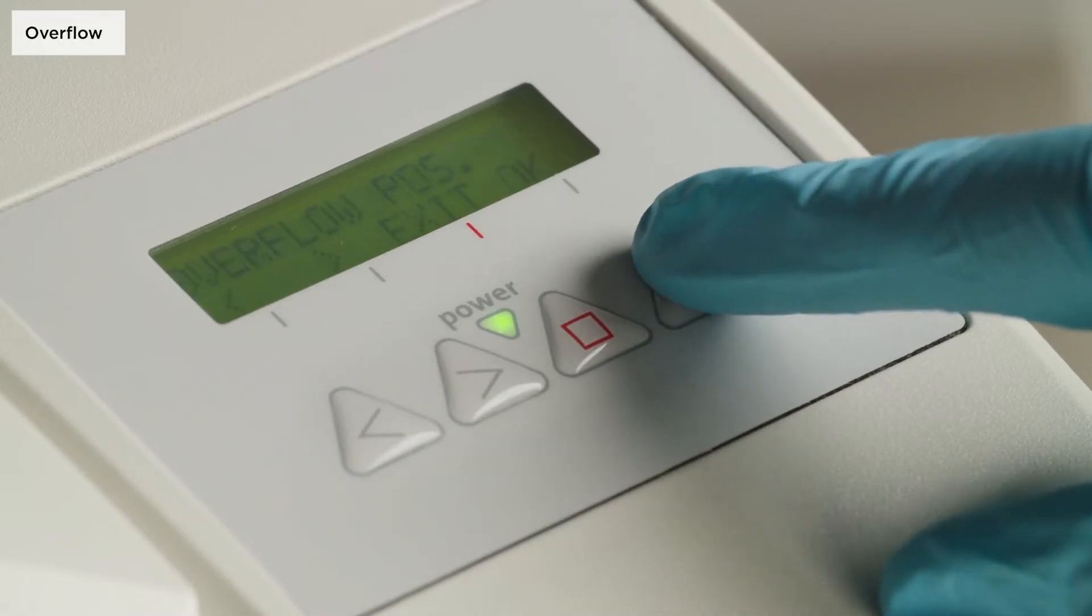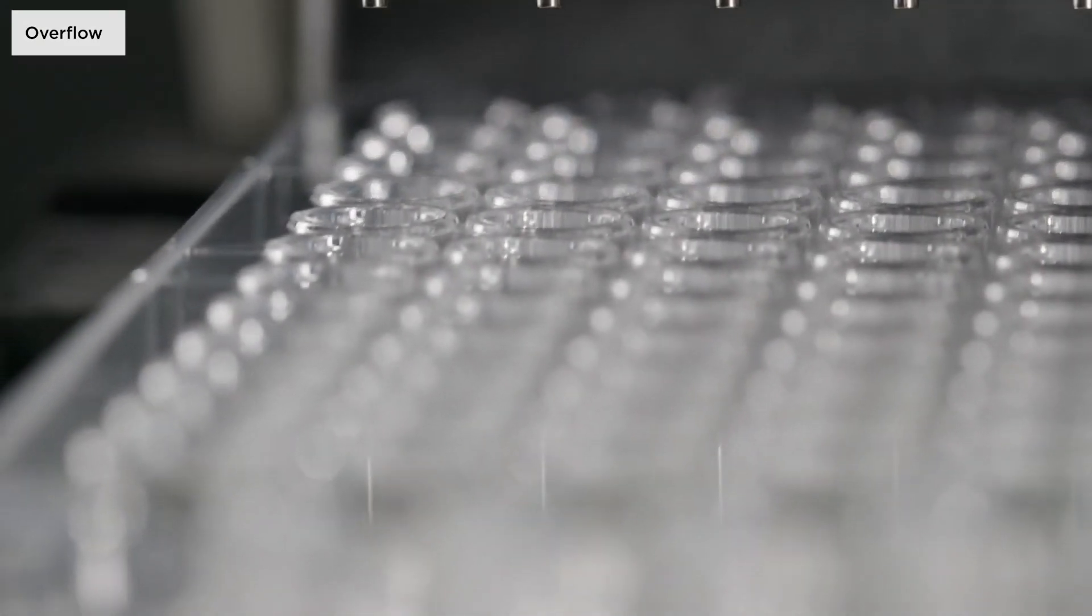The overflow position in a wash step is selected to generate a circular flow in the well and is recommended for ELISAs.